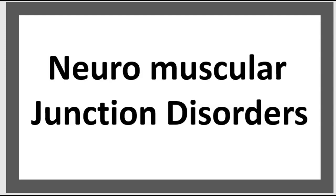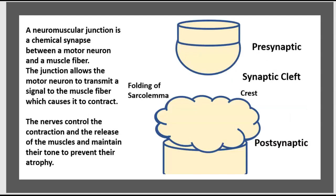Today's topic is about neuromuscular junction disorders. A neuromuscular junction is a chemical synapse between a motor neuron and a muscle fiber. The junction allows the motor neuron to transmit the signal to the muscle fiber, which causes it to contract. The nerve controls the contraction and the release of the muscle and maintains their tone to prevent atrophy.